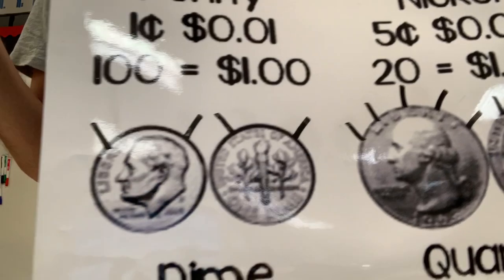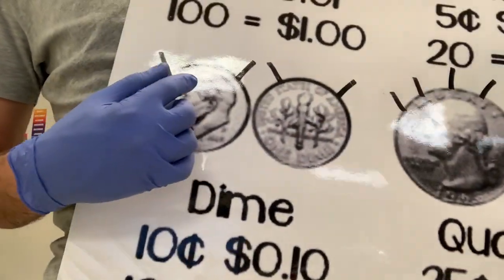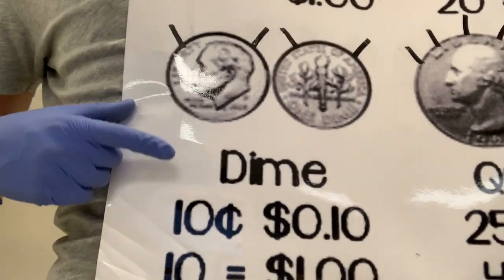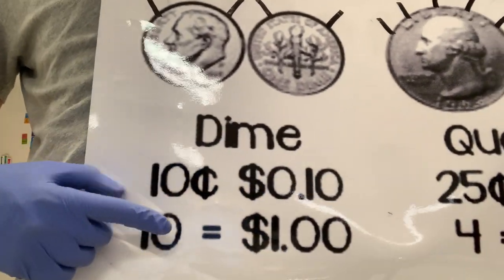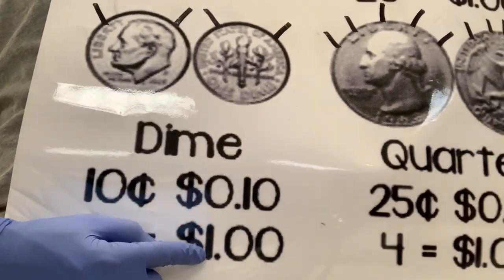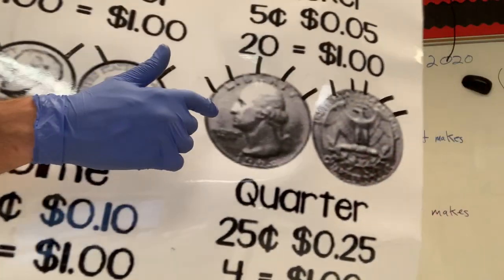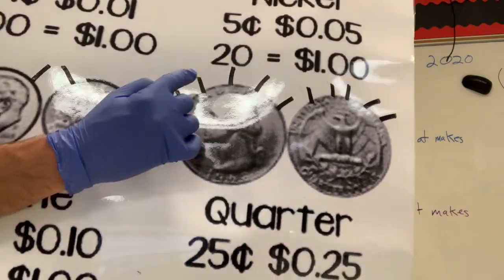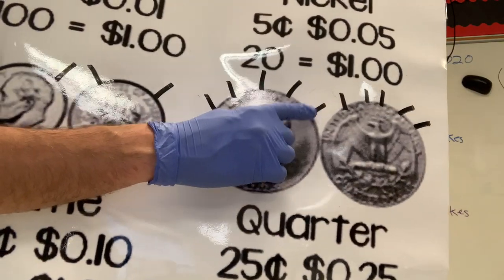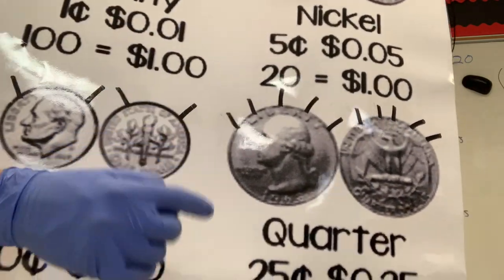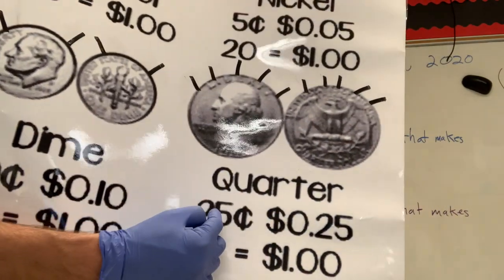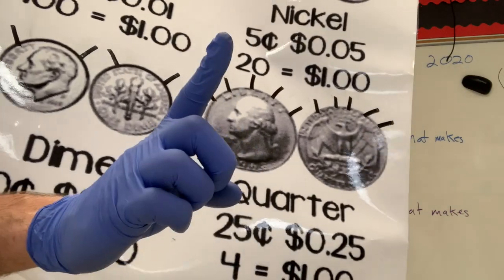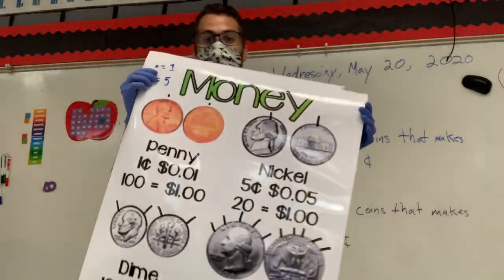The next one we have is the dime. The dime has two hairs. If it has two hairs, it equals ten cents, and ten dimes is one dollar. And last but not least, the greatest one is the quarter. The quarter has five hairs, which means the quarter is twenty-five cents, and four quarters equals one dollar. This is all about hairy money.